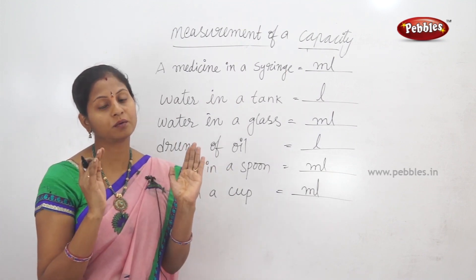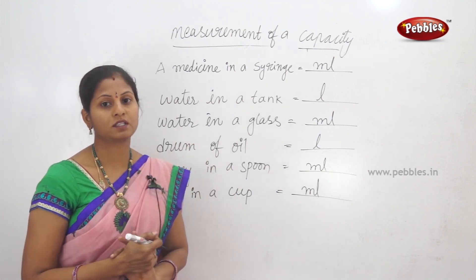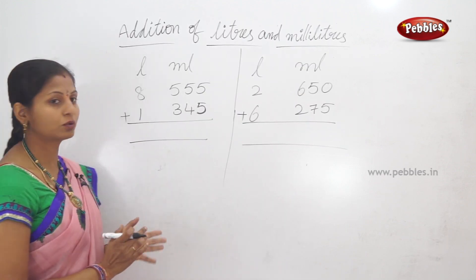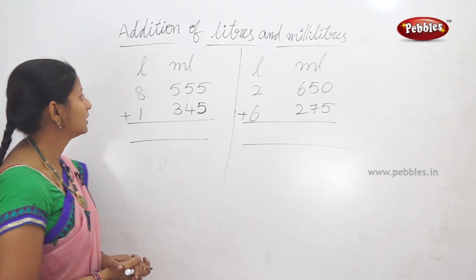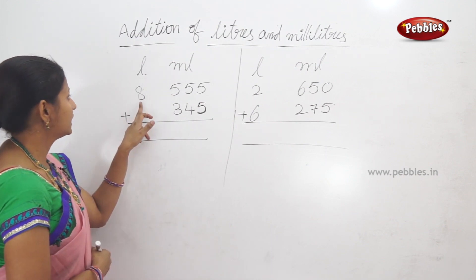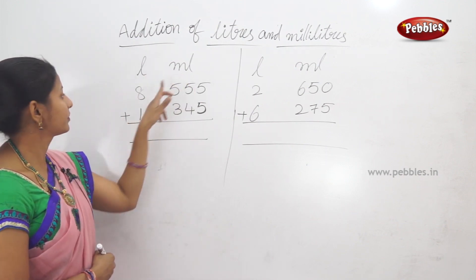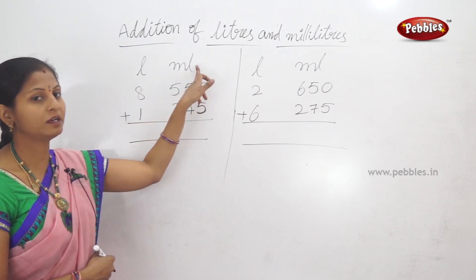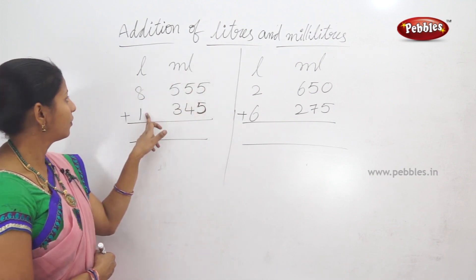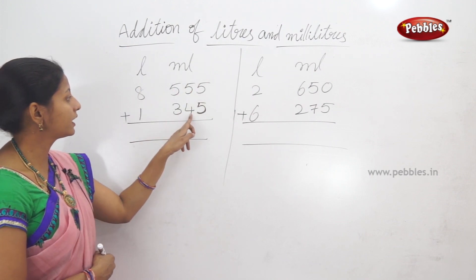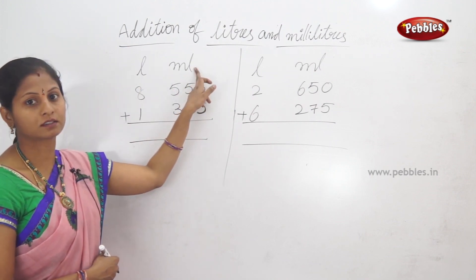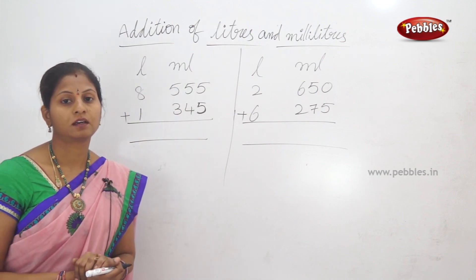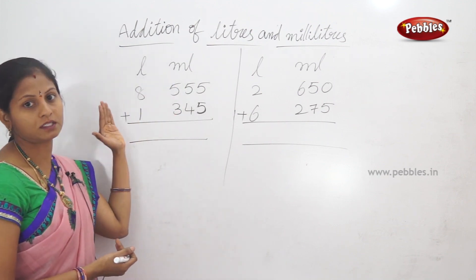So, less quantity is measured in milliliters, and large quantity is measured in liters. Addition of liters and milliliters. Let's look at the addition of milliliters. Liters and milliliters.